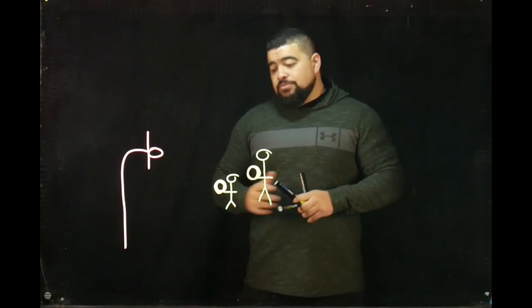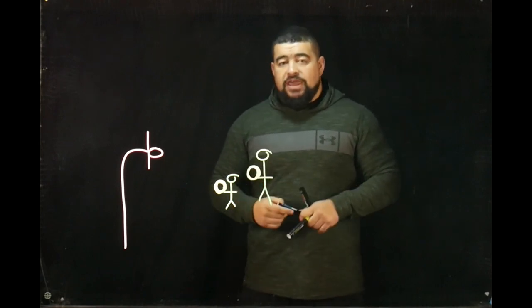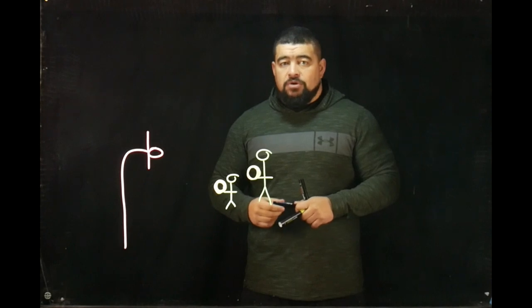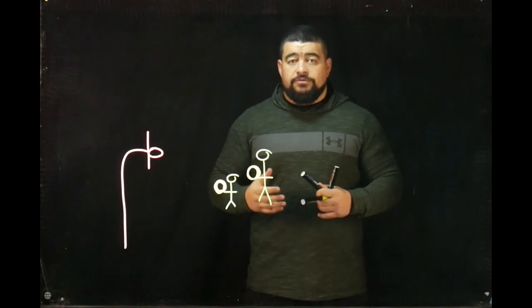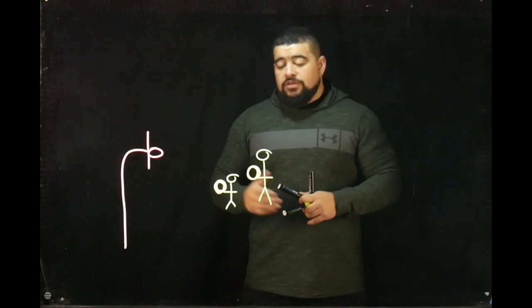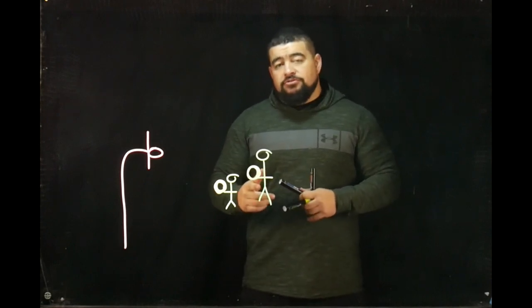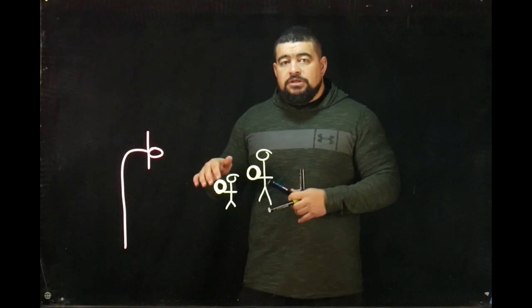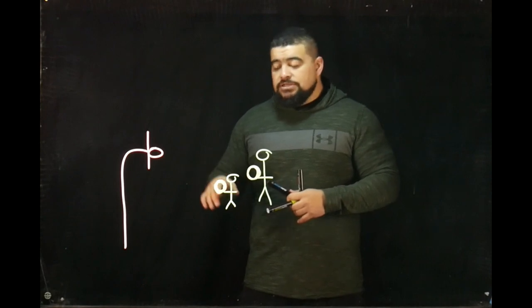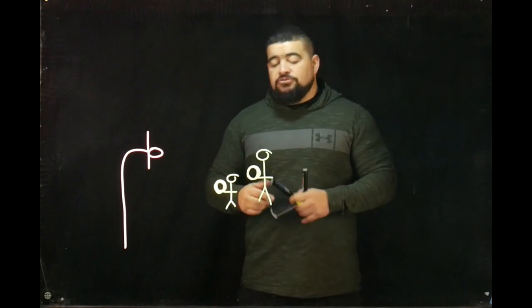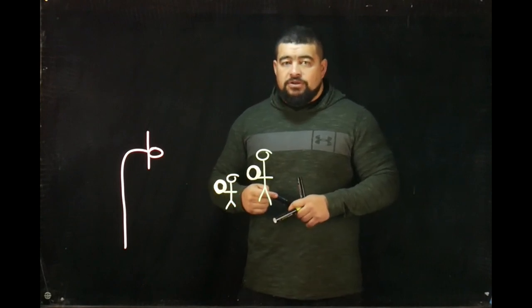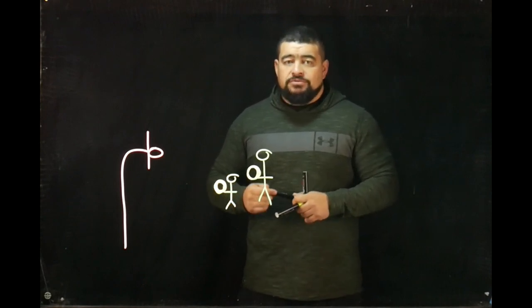As we can see, because of this, the angle of release required is going to be different. The taller player can shoot the ball at a much lower angle of release than the shorter player in order to be successful.